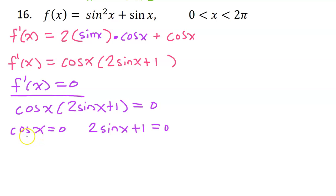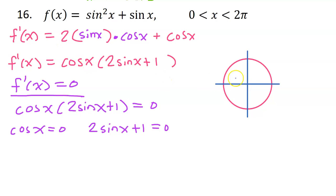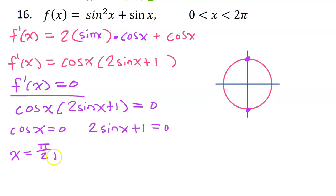Looking at the first factor: if we set cosine x equal to 0, that gives us a critical number. Cosine is the x value on the unit circle, and the x value will be 0 at the top and bottom. So x equals pi over 2 and x equals 3 pi over 2.